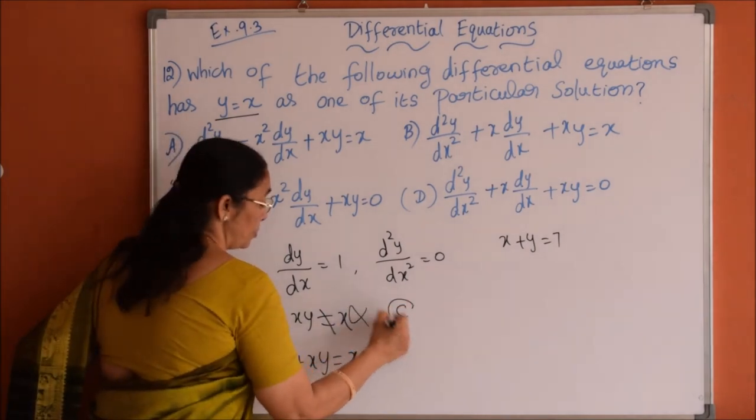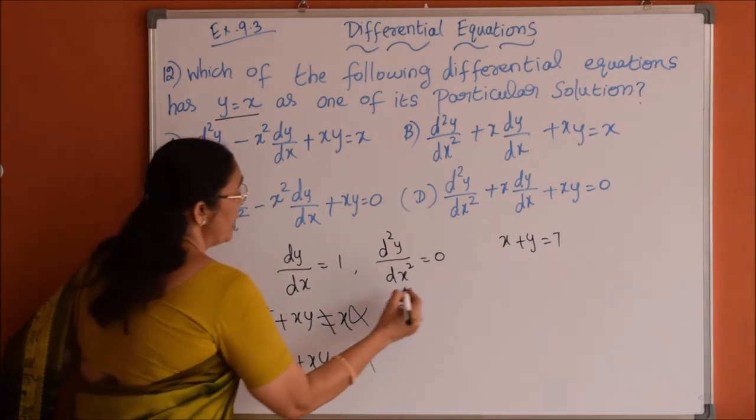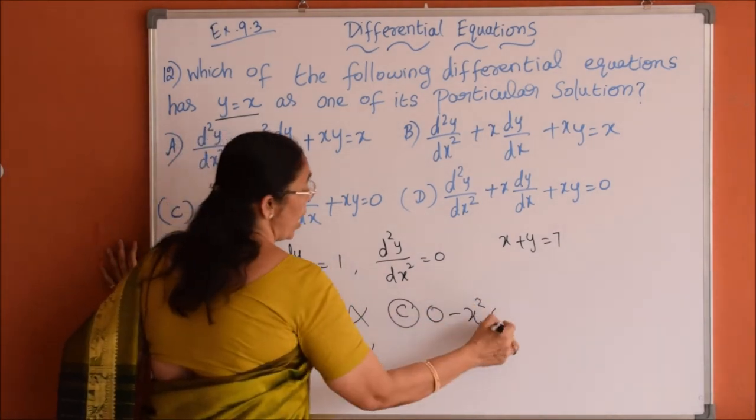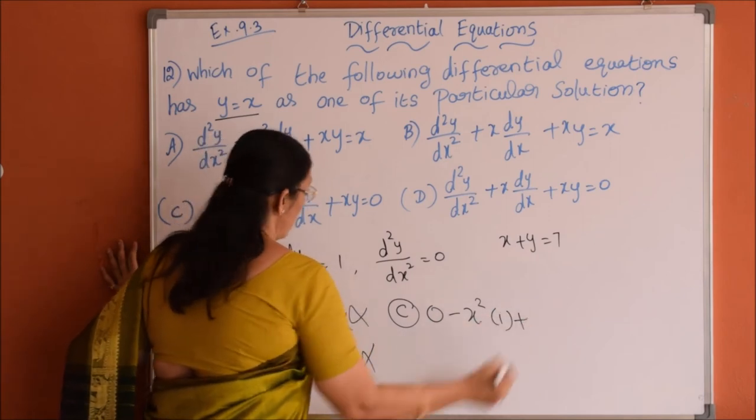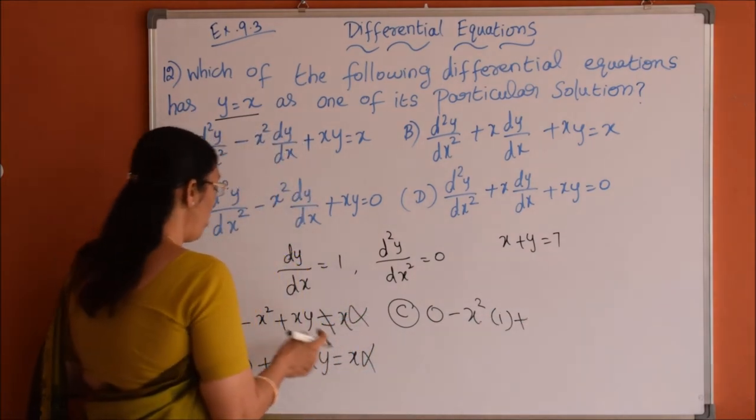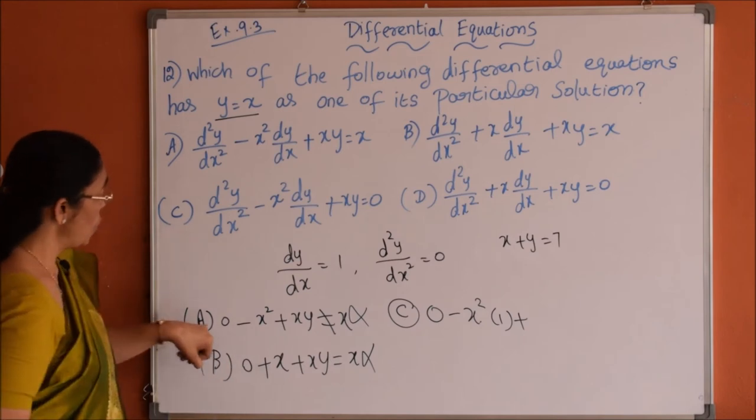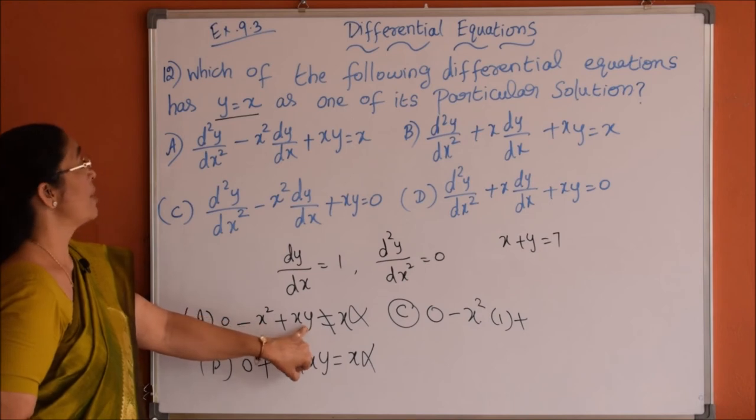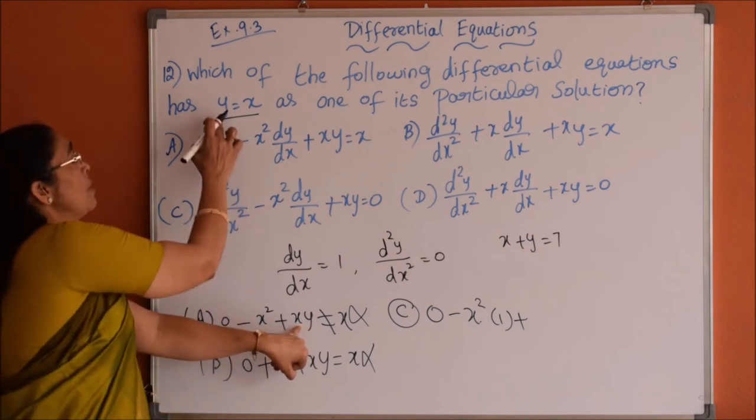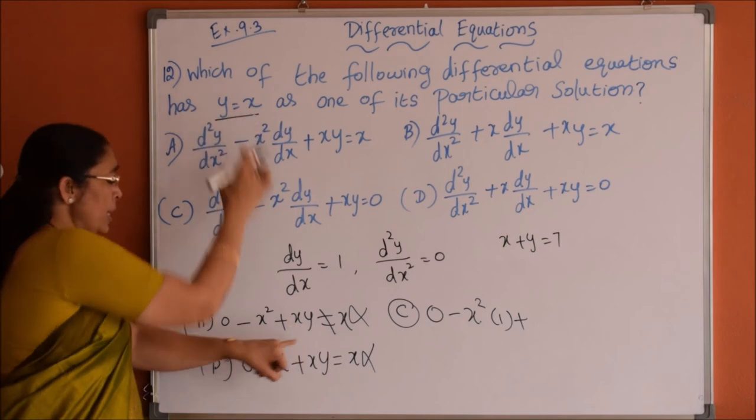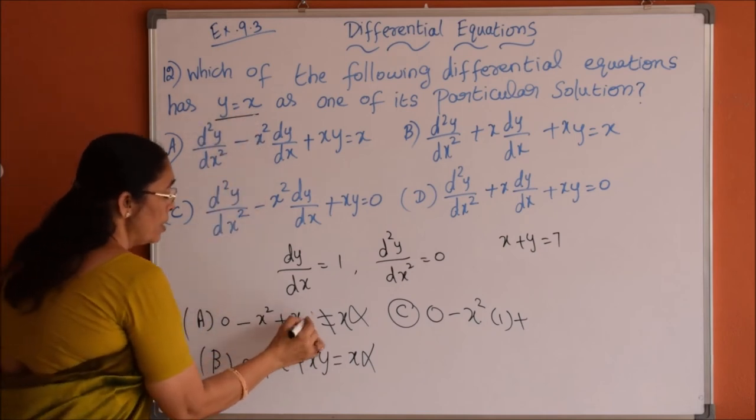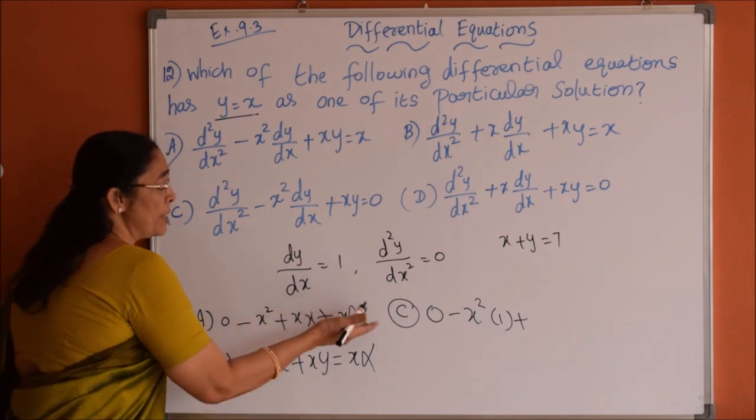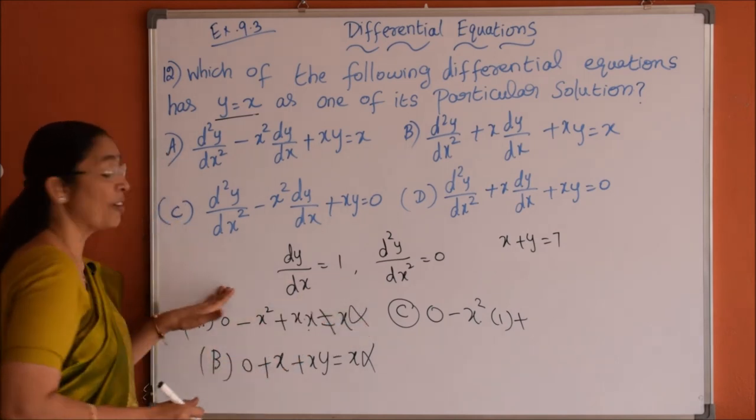Coming to option C, d square y by dx square is 0 minus x square into dy by dx is 1 plus x into... we can substitute even y values everywhere. In the first option, 0 minus x square plus x into y. If I substitute y value from the given equation as x, then substituting y value as x here, this will become x into x, x square. So minus x square plus x square, it should be 0. Here x is there, that's why first option is ruled out.